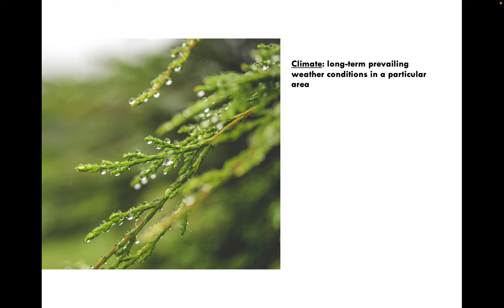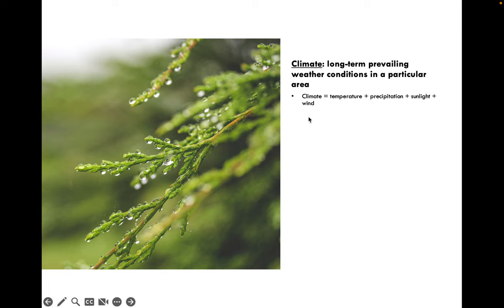Let's talk about some abiotic factors that are important in ecosystems, starting with climate. Climate is the long-term prevailing weather conditions in a particular area — the weather you'd expect in a given place. It's a factor of temperature, precipitation patterns, the amount of sunlight received, and wind patterns. Macroclimate is what we usually think of — for example, Michigan has a temperate macroclimate with all four seasons that are relatively moderate.